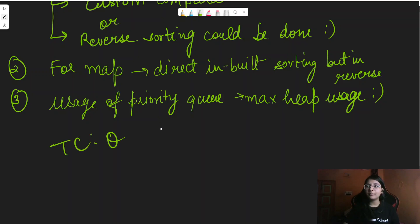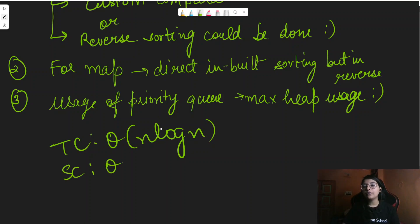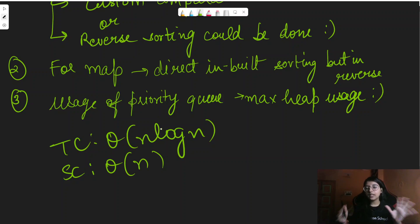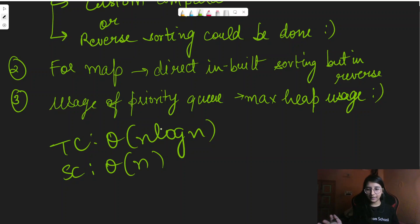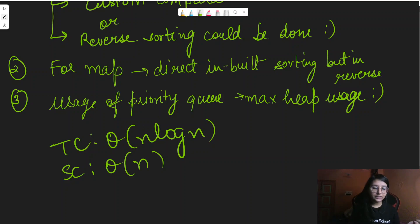The time complexity is O(n log n) for any of these three methods, because we are sorting. The space complexity is O(n) in all three cases — even with a custom comparator, we'd be using one additional array for the customized sorting. Since all approaches have the same complexity, it's better to use the easiest one to implement.